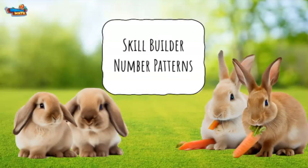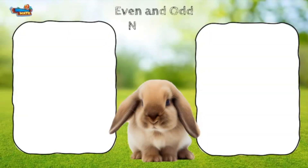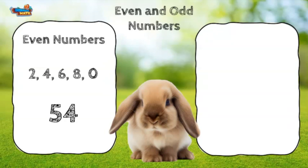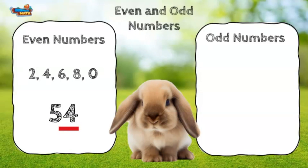Skill builder: number patterns. I get to talk about even and odd numbers. Even numbers are divisible by two. Even numbers end with two, four, six, eight, and zero. The number 54 is an even number. If the digit in the ones place is even, then the whole number is even.